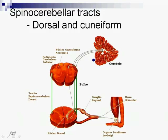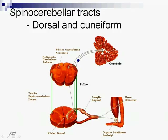Then, the cuneiform — the accessory cuneiform nucleus — that's in the medulla oblongata, that's where the first neurons of the cuneiform spinocerebellar tract ascend. They ascend straight through the spinal cord up to the medulla oblongata and to the accessory cuneiform nucleus, where the second neurons are situated, and also send their fibers to the homolateral side of the cerebellum via the inferior cerebellar peduncle. So, both the dorsal and cuneiform fibers introduce themselves into the cerebellum via the inferior cerebellar peduncle, whilst the ventral spinocerebellar tract fibers introduce themselves through the superior cerebellar peduncle.